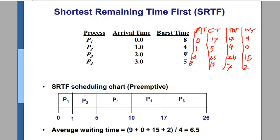Now we have arrival times 0, 1, 2, and 3. We calculate the completion time: P1 completed at time 17, P2 completed at time 5, P3 completed at time 26, and P4 completed at time 10.